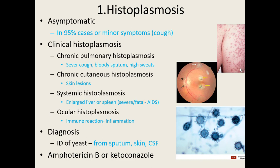Eye involvement causes inflammation, redness, itchiness, and pain. For diagnosis, they examine the actual yeast cells from sputum samples, skin scrapings, or cerebral spinal fluid if nervous system involvement is suspected. Treatment: if you're healthy it can go away on its own; otherwise they administer Amphotericin B or a weaker antifungal called ketoconazole for milder symptoms.